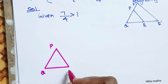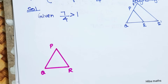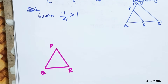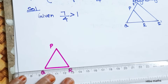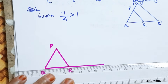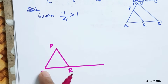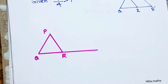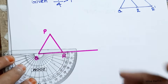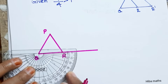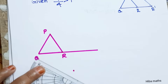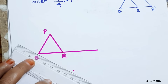This is P, this is Q, and this is R. We have to draw a ray from the vertex of the triangle.